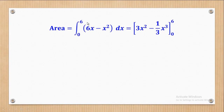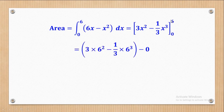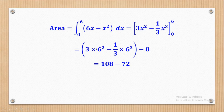The area is given by the integral of f(x), which is 6x - x², with respect to x from the smaller intercept, 0, to the bigger intercept, 6. When I integrate 6x, I get 3x². Integrating x², I get one-third x³. I put it in box brackets with the lower limit 0 and upper limit 6. Substituting x = 6 gives 108, and substituting x = 0 gives 0. In the end, I get the area as 36 square units. Note that this value is positive, meaning the area is above the x-axis.